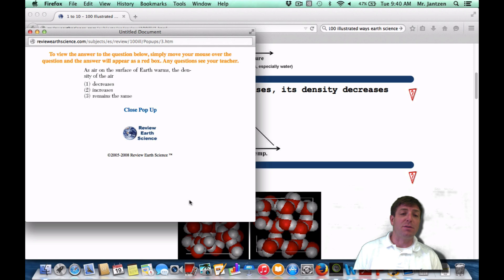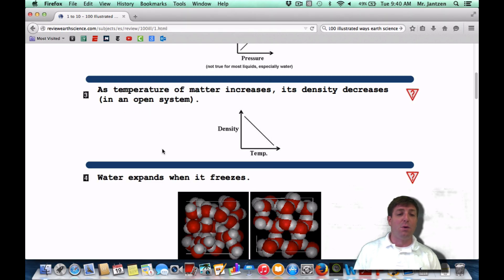So a Regents question: as air on the surface of Earth warms, that means it gets warmer, so the molecules spread out. What's going to happen to the density? The molecules are further apart, so your density is going to decrease.